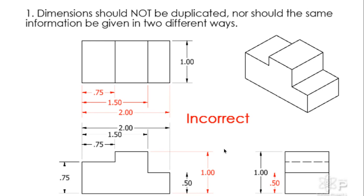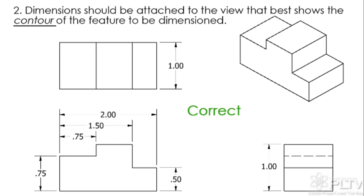Put the dimensions on the view that really shows it. That's what a contour means. There's 0.75 down here shows we come 0.75 over, then we have a turn up. Putting the 0.75 up here, yeah, it says we come 0.75, then something happens. We don't know what happens though. Does it go up, does it go down?